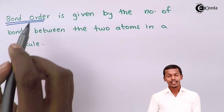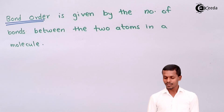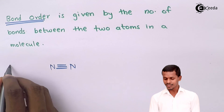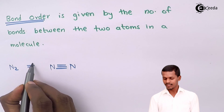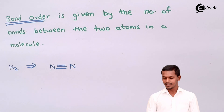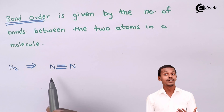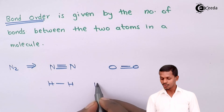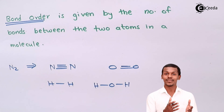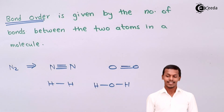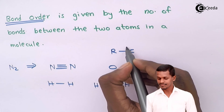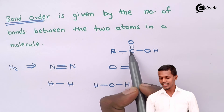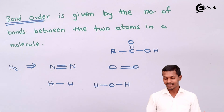The last parameter is bond order, which is given by the number of bonds between two atoms in a molecule. For nitrogen (N₂), three bonds are formed, so the bond order is 3. For oxygen (O₂), the bond order is 2. For hydrogen (H₂), the bond order is 1. We must specify between which atoms we are measuring. For a carboxylic acid, the bond order between the carbon and the double-bonded oxygen is 2, while between the carbon and the single-bonded oxygen it is 1.